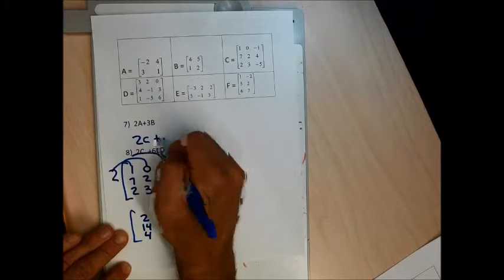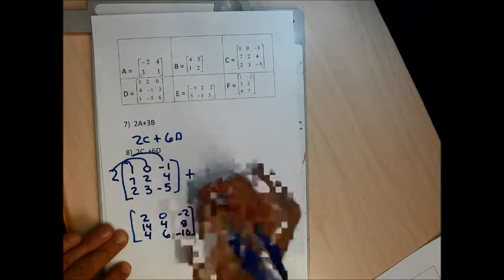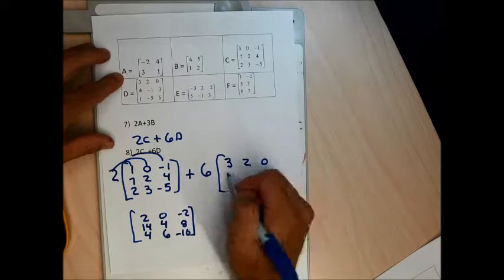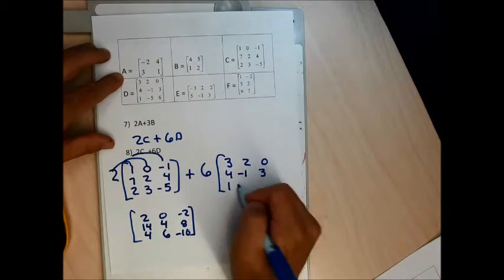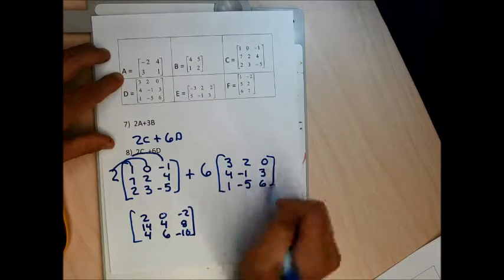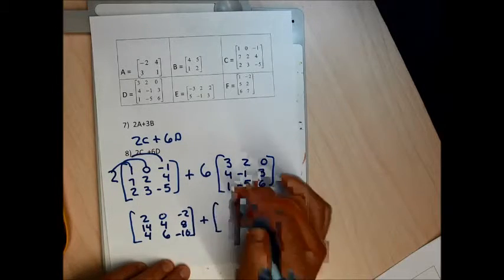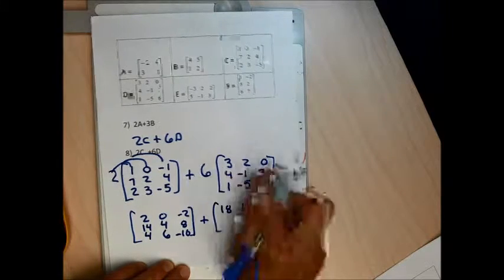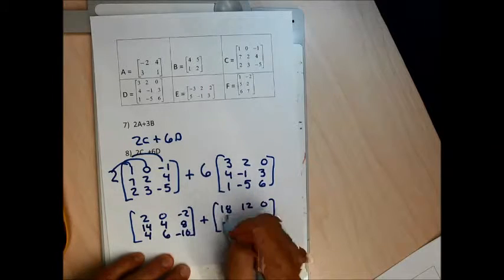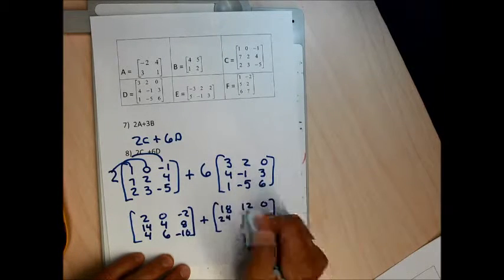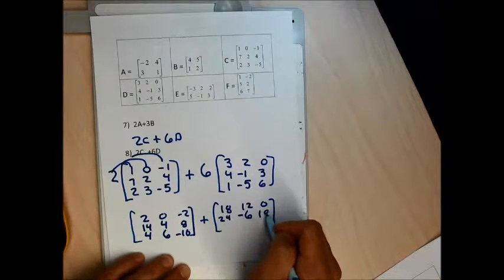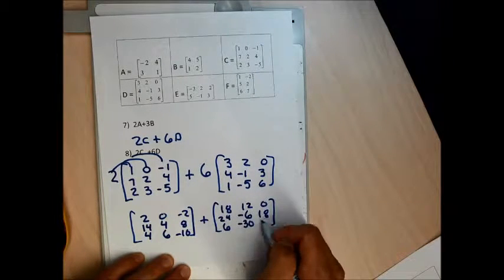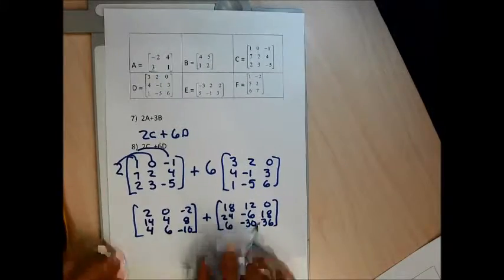Now I have to do the 6D part. To do 6D, I multiply every single number in matrix D by 6. So: 6 times 3 is 18, 6 times 2 is 12, 6 times 0 is 0, 6 times 4 is 24, 6 times negative 1 is negative 6, 6 times 3 is 18, 6 times 1 is 6, 6 times negative 5 is negative 30, 6 times 6 is 36. Now I've done the scalar multiplication and I'll do the addition.